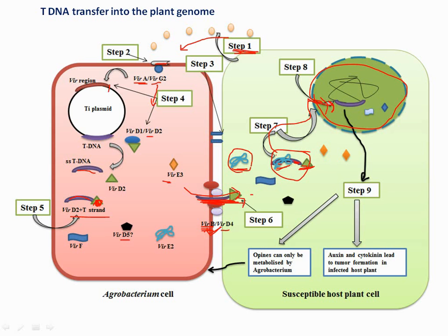VIP1 and VirF proteins make the T-complex larger directly and indirectly. After going inside the nucleus, the single-stranded T-DNA is converted into double-stranded T-DNA, which is integrated into the plant genome via illegitimate recombination. Proteins are then produced via transcription and translation. This completes the mechanism by which T-DNA is transferred.